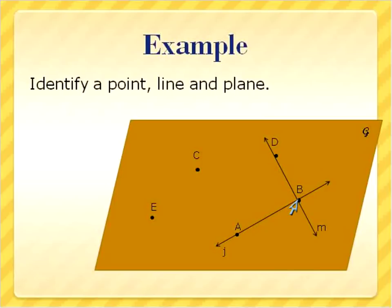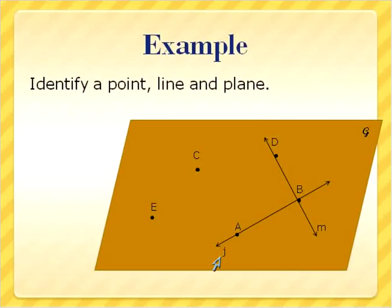That's where these two lines intersect. Speaking of lines, how would we label this line? From this point going infinitely in both directions, we could label this line as line AB because points A and B are both along this line. Or the lowercase letter J — this could be line J. Same with this other line we see here. We could call this line DB, or since the lowercase letter on this line is M, we could call this line M.